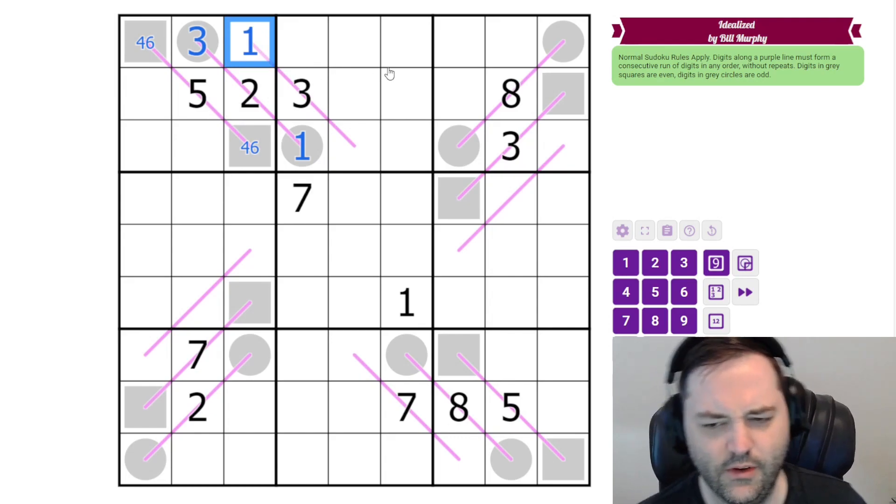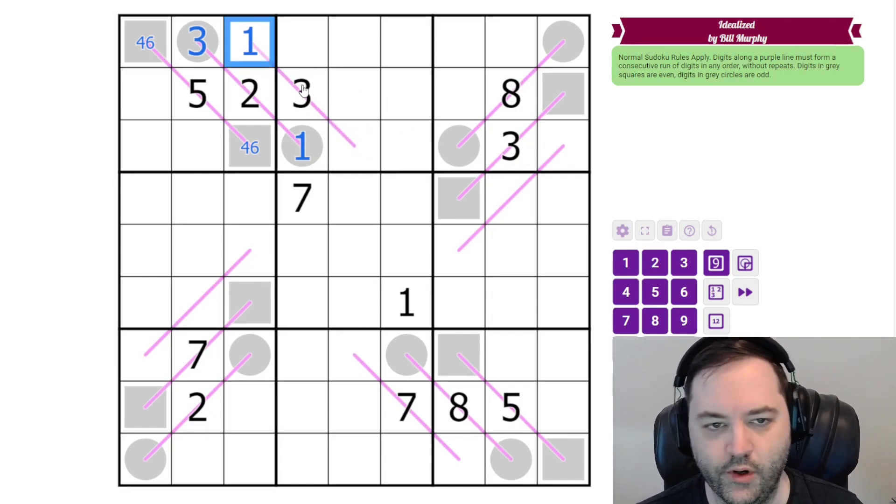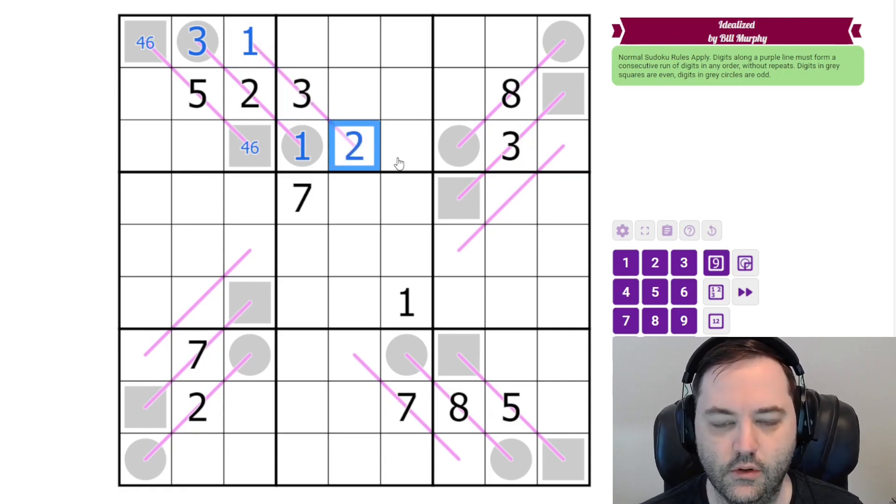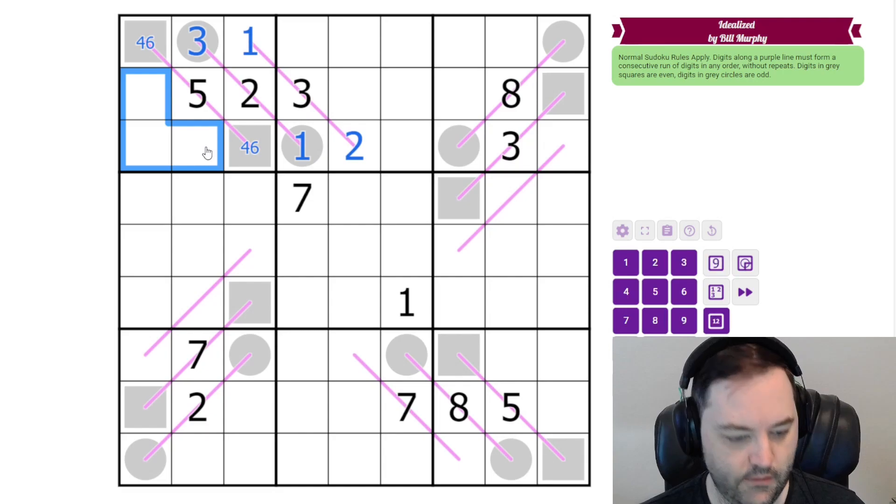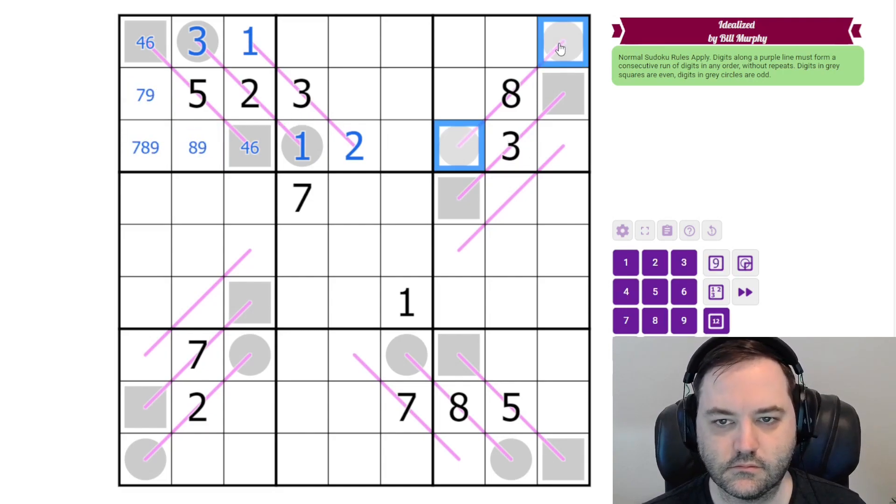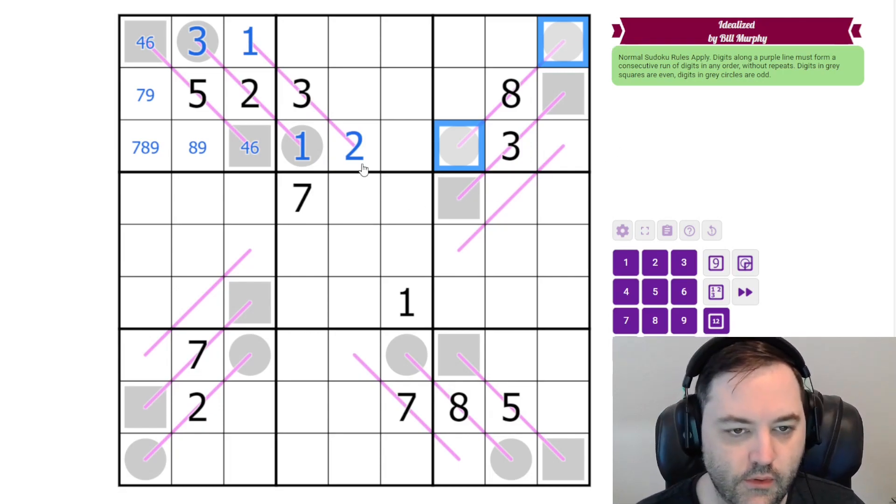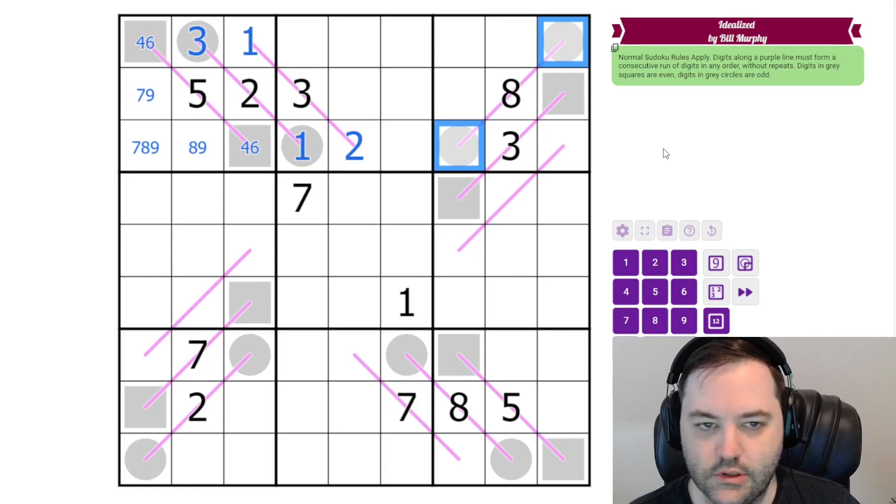And I apologize if I sound kind of funny. My sinuses are still a little bit of a mess. But if we have one on the line, now we have to have one, two, three. So that's one, two, three. And these are going to be from seven, eight, nine. This one's not seven. This one's not eight. Okay. Sorry about that. I had to try and clear my nose and throat. I am really struggling this morning.